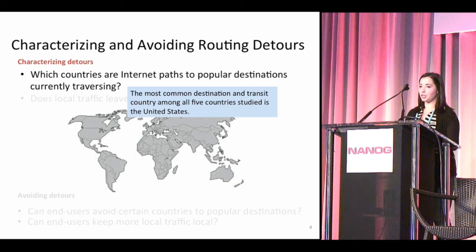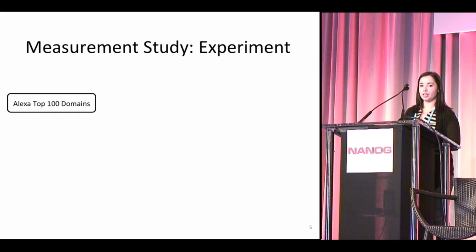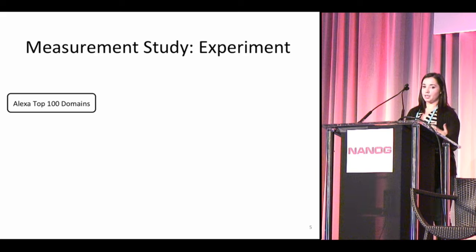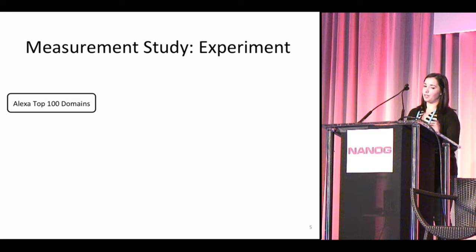After picking these countries, we go back to our first question: which countries are internet paths to popular destinations currently traversing? We found that this is actually the United States — the most common country for paths originating in India, Kenya, Netherlands, and Brazil is the United States. I'll talk about how we got to this result and a couple of other key findings.